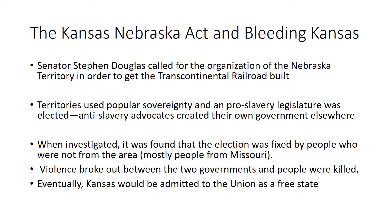This greatly angered anti-slavery advocates, and they created their own government elsewhere, so essentially Kansas had two separate state governments operating at once. Since this cannot happen, it was investigated, and it was found that the election was fixed — they had cheated — by people who were not even from the area. Many people from Missouri were sneaking into the Kansas Territory and stuffing the ballot box with pro-slavery votes. Violence then broke out between the two governments and many people were killed. This event was known as Bleeding Kansas.